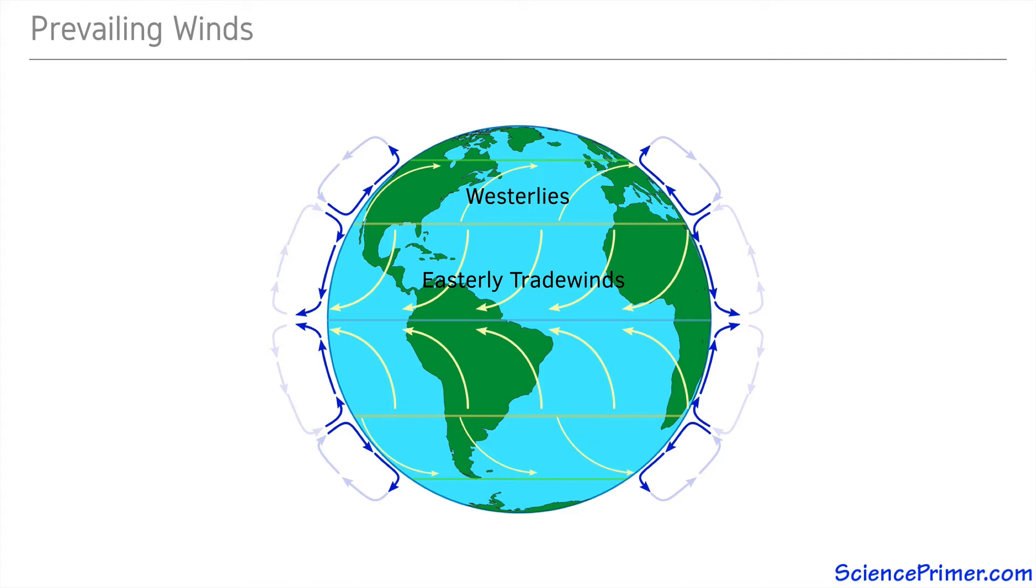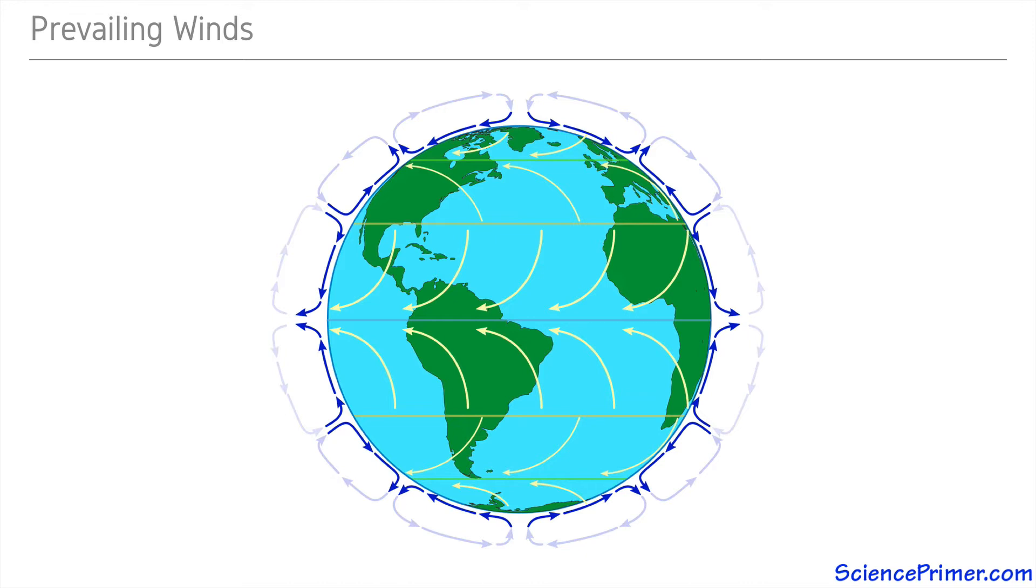Between the poles and 60 degrees, surface air moves from the poles and is diverted to the west. The location of these high and low pressure systems, and the movement of air between, has a major impact on precipitation and evaporation.